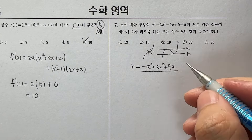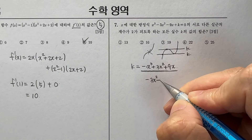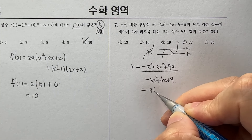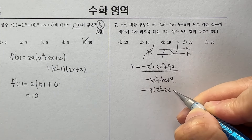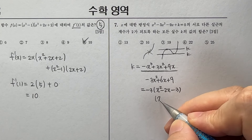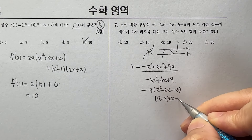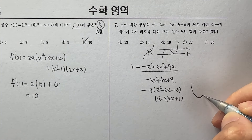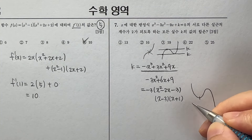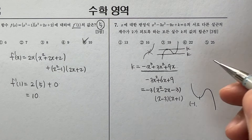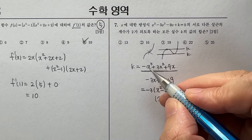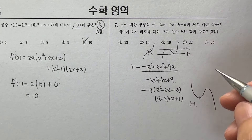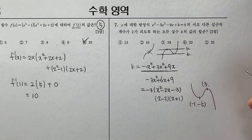따라서 k는 이항해서 이렇게 되고, 이 식을 가지고 그래프를 그리면 되겠죠. 미분해 보면 -3x² - 6x + 9, -3을 묶어내면 이렇게 되고 인수분해하면 이렇게 되고, 최고차항이 음수이기 때문에 오른쪽 아래로 내려가는 그래프가 됩니다. x에 -1을 대입하면 극소점이 나오겠죠.